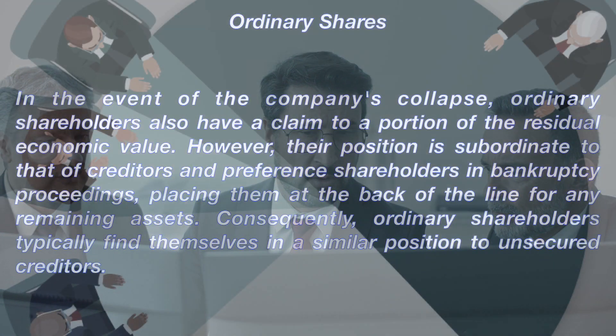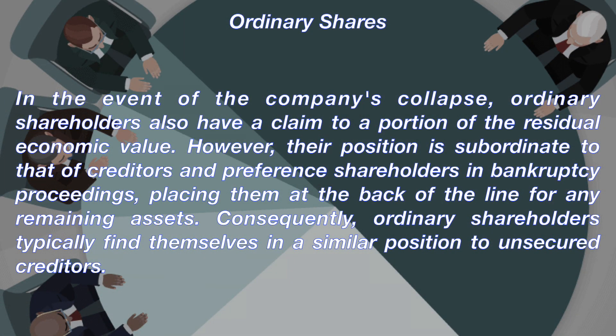In the event of a company's collapse, ordinary shareholders also have a claim to a portion of the residual economic value. However, their position is subordinate to that of creditors and preference shareholders in bankruptcy proceedings, placing them at the back of the line for any remaining assets. Consequently, ordinary shareholders typically find themselves in a similar position to unsecured creditors.